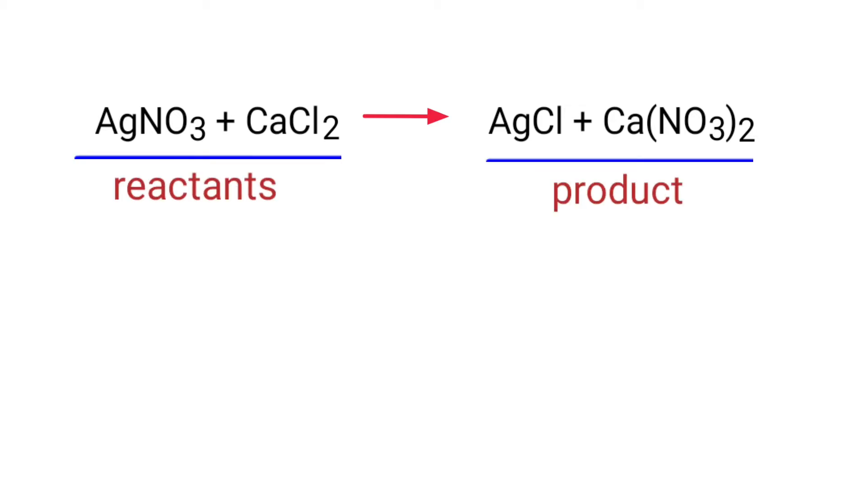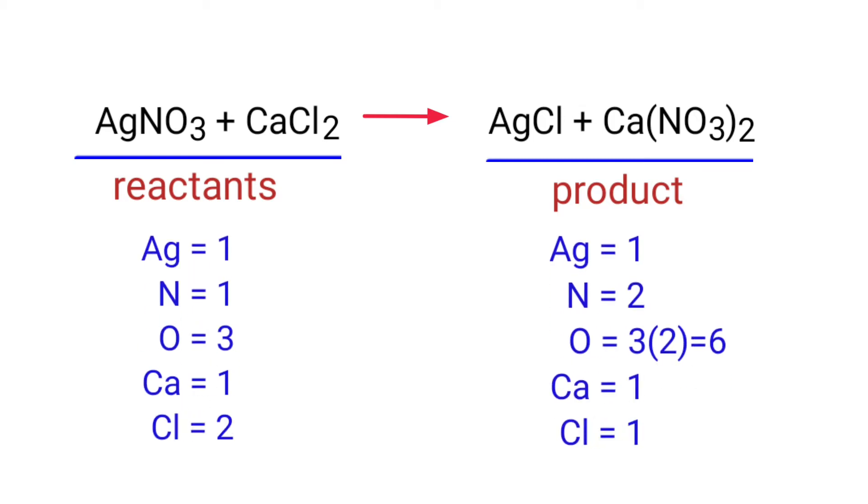In this equation, the reactants are silver nitrate and calcium chloride, and the products are silver chloride and calcium nitrate. If you look at this equation, the equation is not balanced.